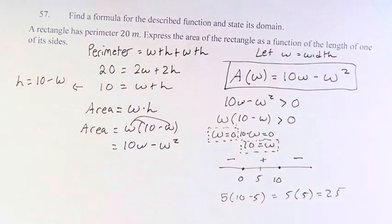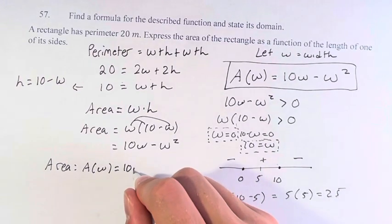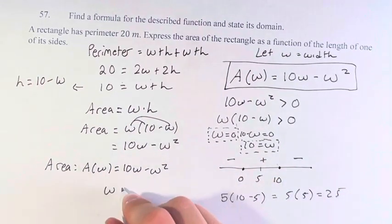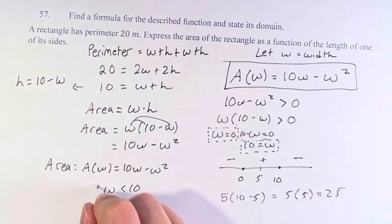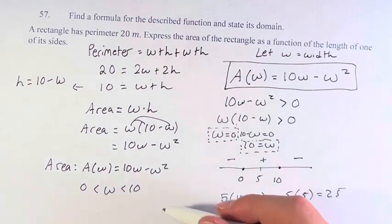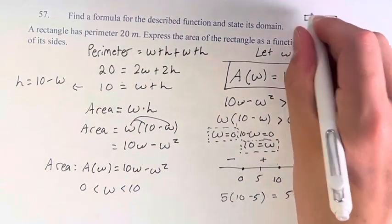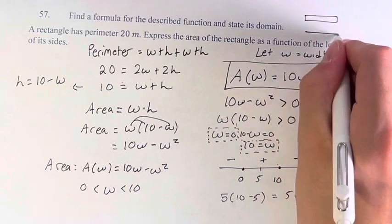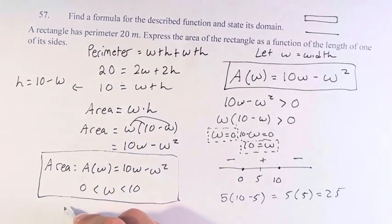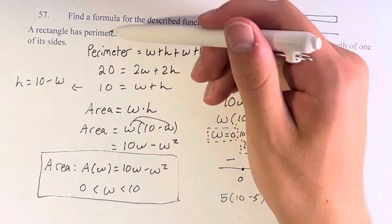Therefore, this area A of w is equal to 10w minus w squared. This is true if w is less than 10 and greater than zero. And these are not inclusive because not only can the area of a rectangle not be negative, the area of a rectangle can't be zero. You can't have one that's just a straight line with no width. Therefore, this is the function that represents the area of a rectangle with perimeter 20 meters with respect to the width.